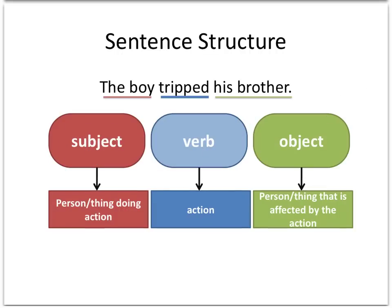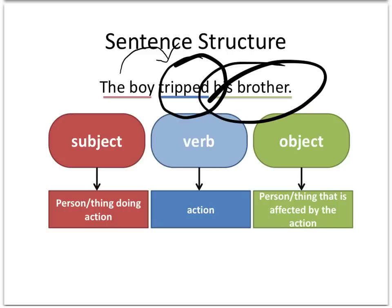In this example, we have 'the boy tripped his brothers.' The action here is 'tripped,' so someone has been tripped. The person doing that action — the culprit — is the boy, so he is the subject; he is doing the tripping. The affected party, the one that didn't necessarily ask to be involved but nevertheless is involved, is the poor brother — we're going to assume it's the little brother. The boy tripped his brother. Very simple sentence structure.